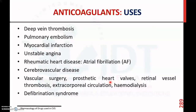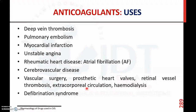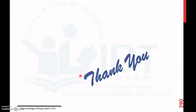General uses of anticoagulants include treatment of deep vein thrombosis, pulmonary embolism, myocardial infarction and unstable angina, rheumatic heart diseases like atrial fibrillation, cerebrovascular diseases, vascular surgery, prosthetic heart valve, retinal vessel thrombosis, extracorporeal circulation, hemodialysis, and disseminated intravascular coagulation (DIC) syndrome. In summary, we discussed parenteral anticoagulants like heparin and lepirudin, and oral anticoagulants like warfarin and direct factor 10 inhibitors like rivaroxaban.